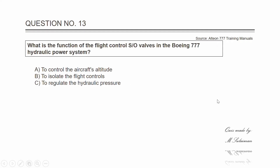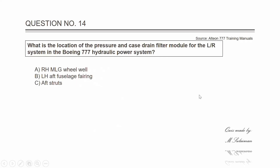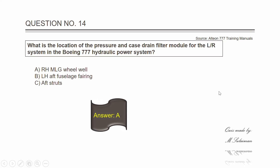Question thirteen: what is the function of the flight control shutoff valves in the Boeing 777 hydraulic power system? The answer is B — to isolate the flight controls. Question fourteen: what is the location of the pressure and case drain filter module for the left and right systems? The answer is A — right hand main landing gear wheel well.